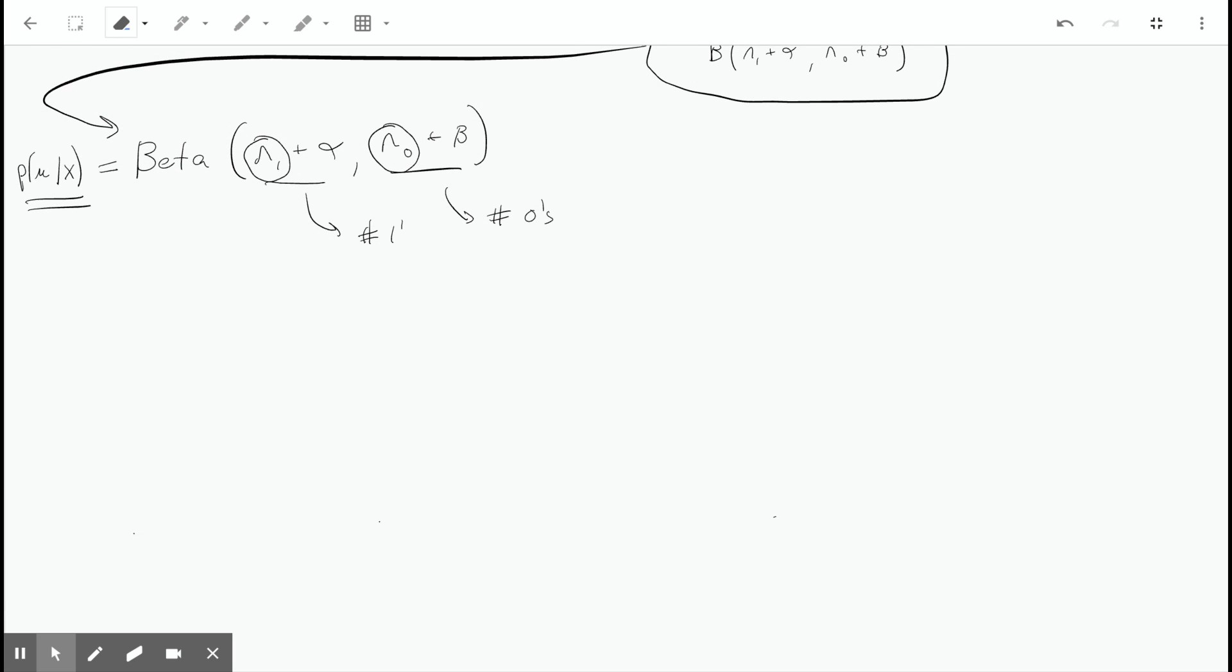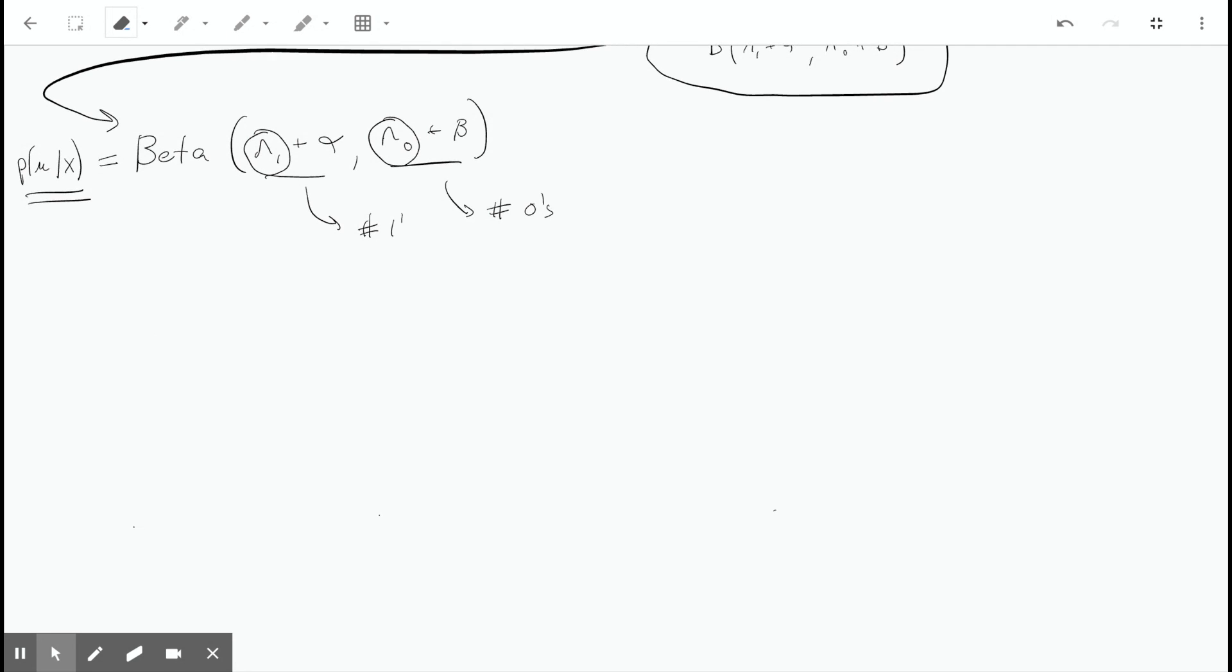So last time we found out that the posterior distribution is distributed as a beta distribution, just like the prior was, except that we have new parameters for the posterior beta.